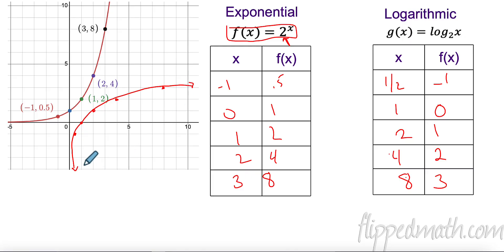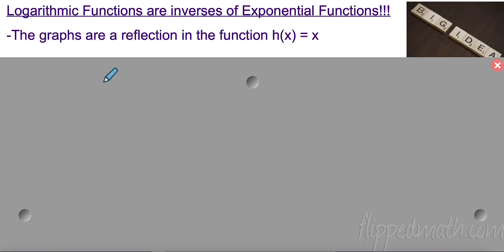So this is going to be 0.5 or 1 half and negative 1. So now we can kind of plot these, right? So I have 1 half and negative 1, I have 1 and 0, I have 2 and 1, I have 4 and 2, and I have 8 all the way down here and 3. And if I'm really, really good, I can draw this logarithmic graph. Now, of course, I'm not really, really good at it, but you get the point.